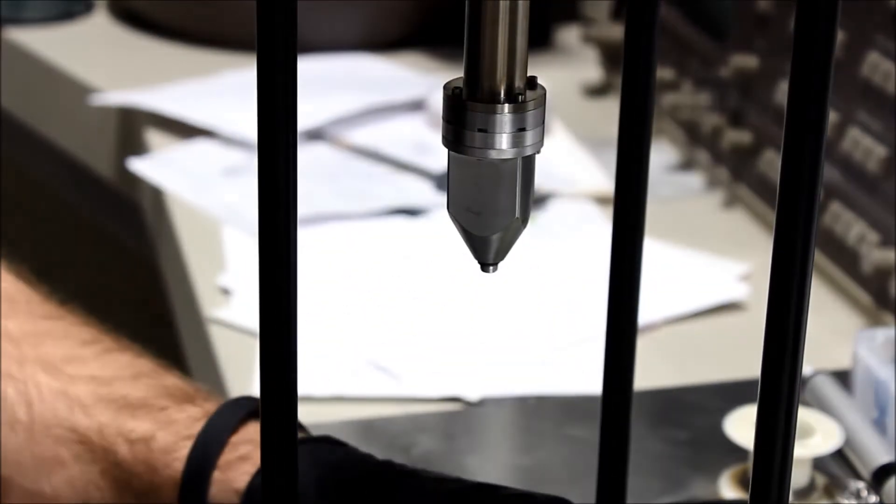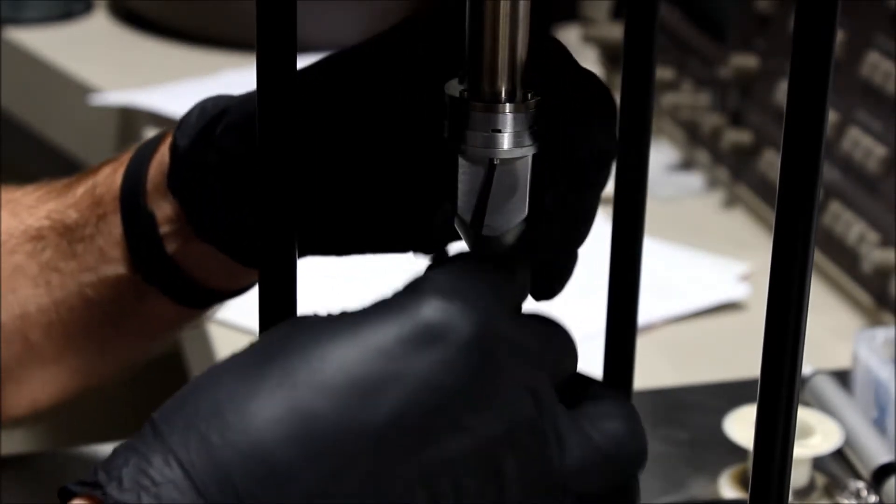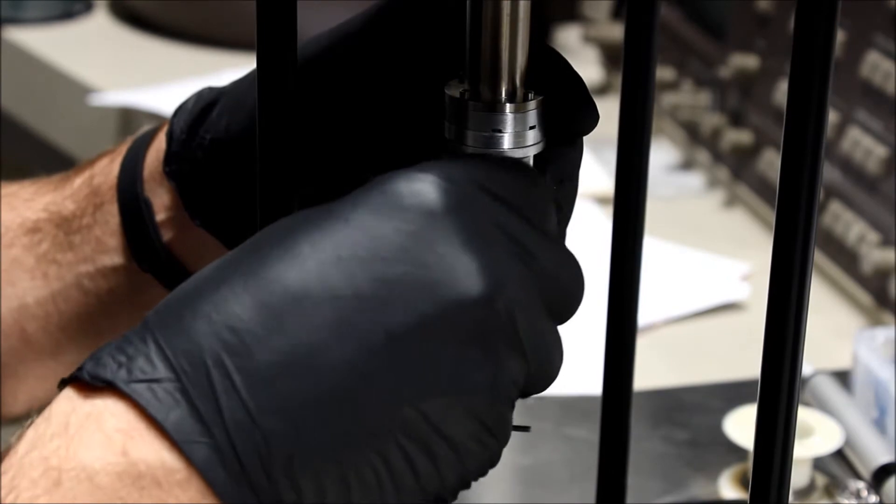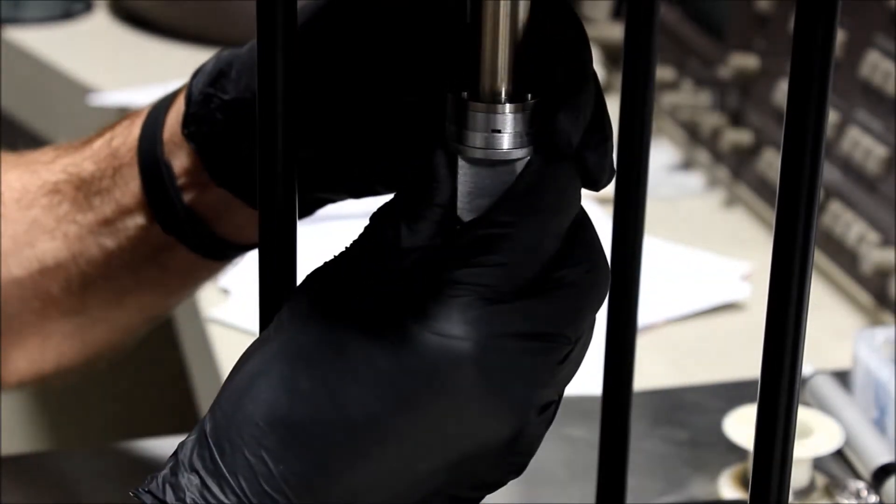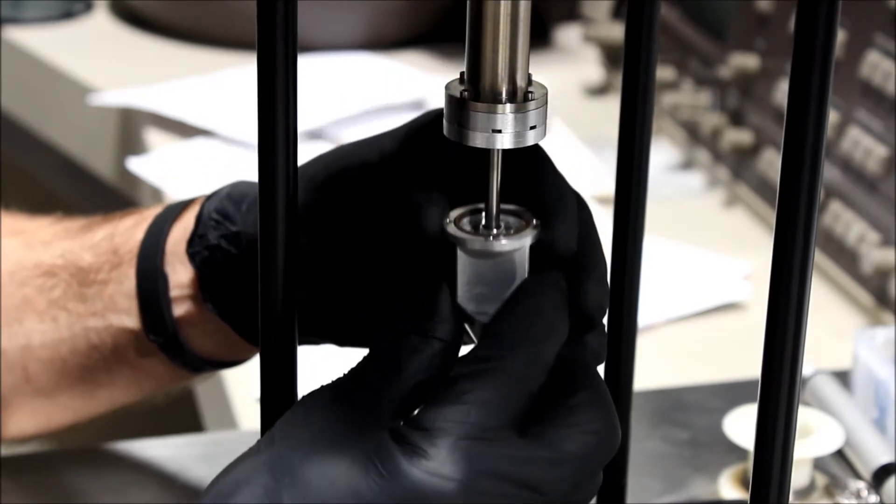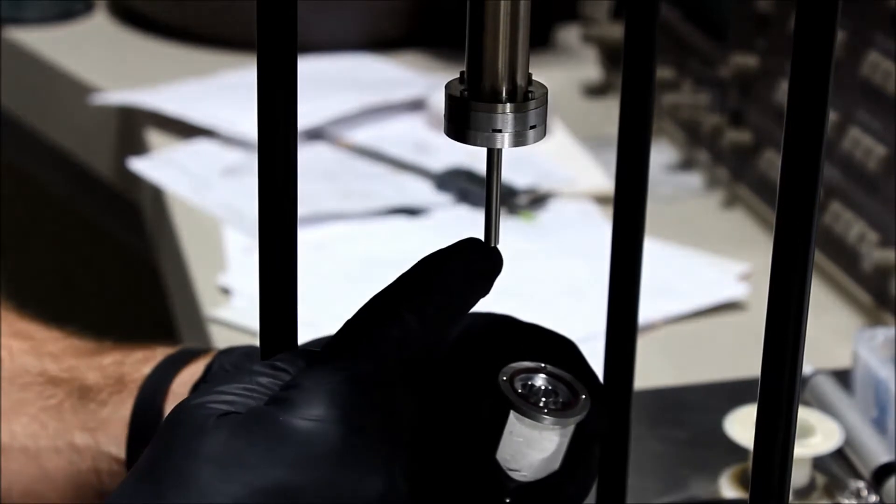When we have all four screws removed, the crucible will easily remove itself from the GIS. Sometimes it requires a little bit of force to get it to pop off, but anyway, this one's coming off nice and easy.